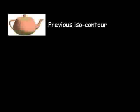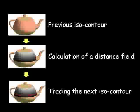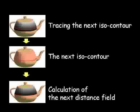The system places a series of ice contours one by one at constant intervals. The system computes a distance field to the previous contour and traces an ice contour in which the value of the field equals the desired interval. We get the next ice contour. The system repeats this process.